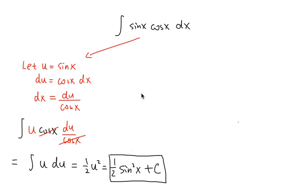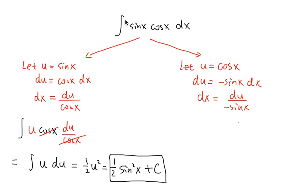So this is the first answer. And now, if I take this from a different approach, if I let u equals to cosine x, and let's see if this will work as well. Du will be negative sine x dx, and dx will be du over negative sine x.